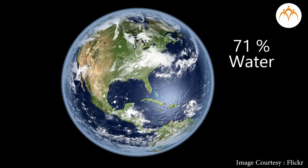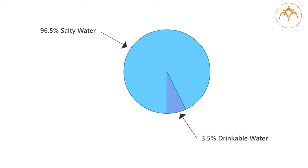How much of the Earth's surface is covered with water? Can we use all this water for drinking? 71% of Earth's surface is covered with water. 96.5% of water is present in oceans, which is salty and hence cannot be used for drinking.